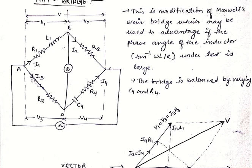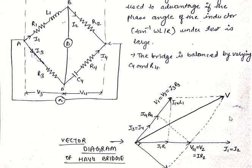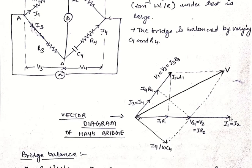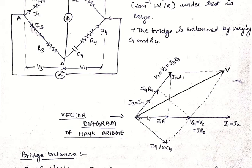This is the equivalent circuit diagram of Hay's bridge. Coming to the vector diagram of Hay's bridge, in this diagram we have I1, I2, I3, and I4, which are not in phase with each other. Unlike previous cases where I1, I2 and I3, I4 are on the same line, in Hay's bridge we have some phase difference between I1, I2 and I3, I4.